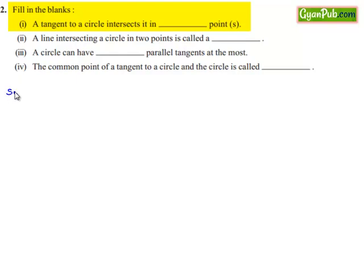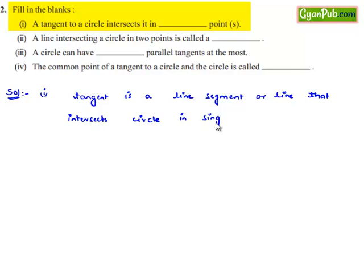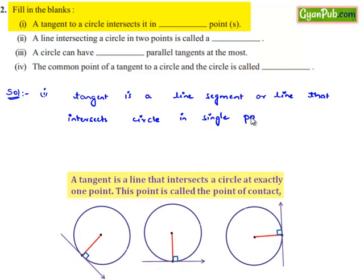Now moving to the solution for the first bit, we know that from the definition of the tangent that a tangent is a line segment or line that intersects a circle in a single point, and that point must lie on the circumference of the circle. Therefore, the answer for the first bit will be one point.